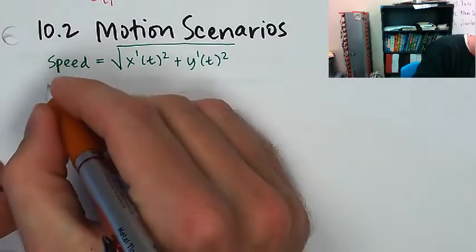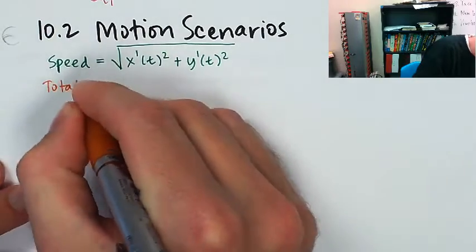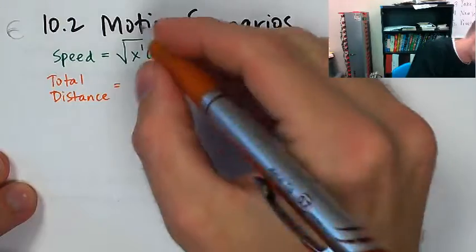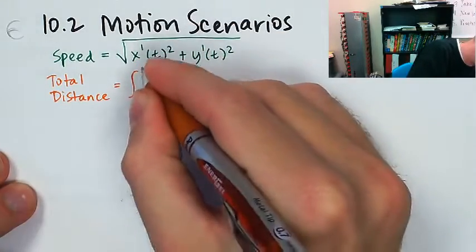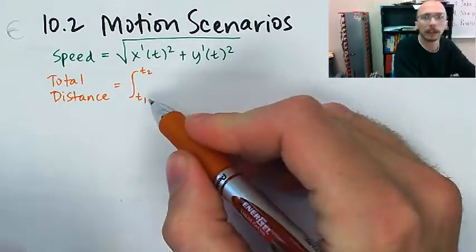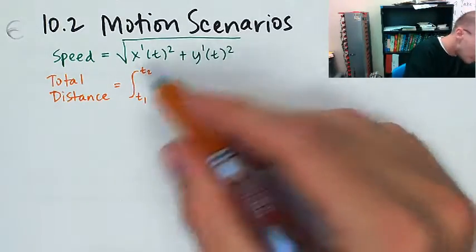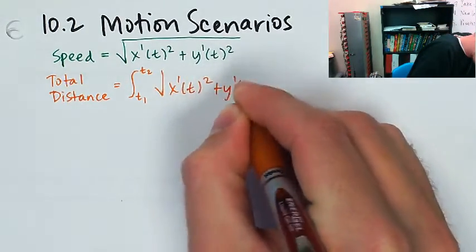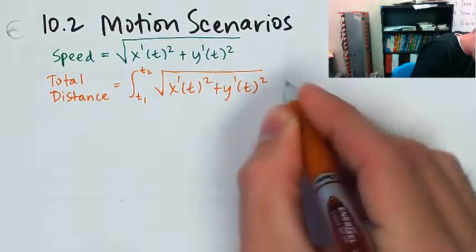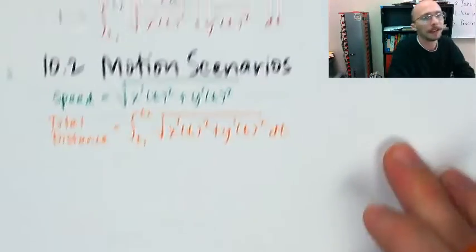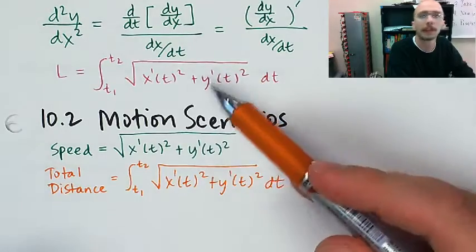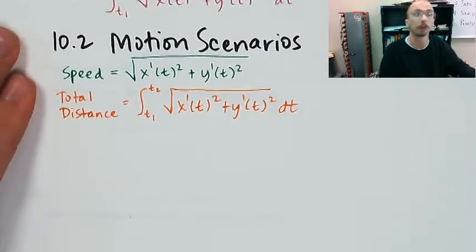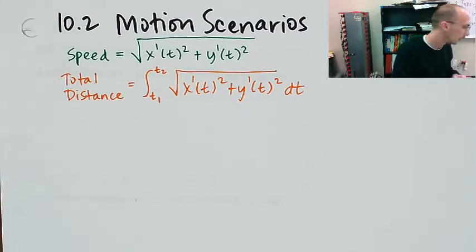Now we're going to do the exact same thing. And so the total distance is the integral from time one to time two of speed. And so that's just x'(t) squared plus y'(t) squared with respect to time. And if you move that up there, look, that's the same thing, and it's like, oh yeah, that does make sense that the arc length would be the same as the total distance traveled if you had an object traveling along a parametric curve. Makes sense.